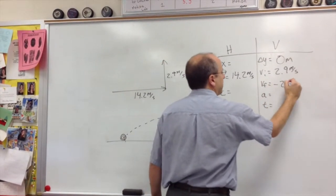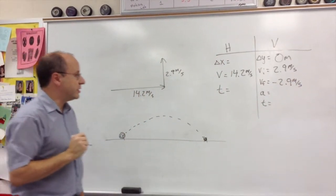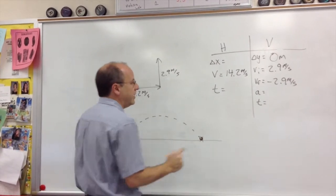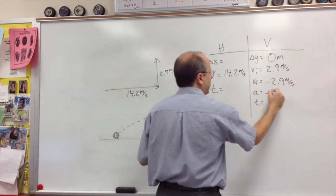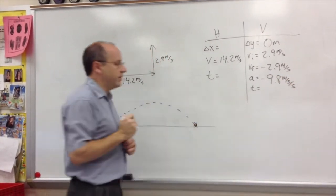The final speed should be the same as the initial speed, just in the opposite direction. And that's any time it returns to its original height, it returns to its original speed. Since we're on the planet Earth, we use our acceleration of negative 9.8.